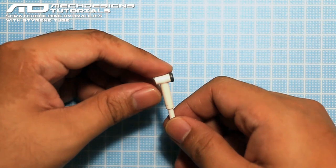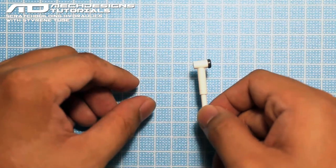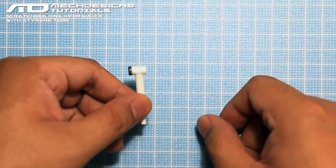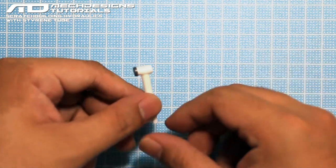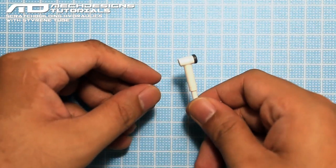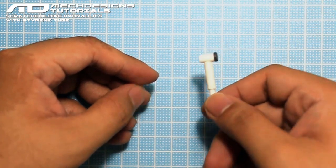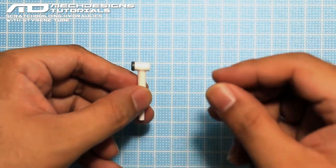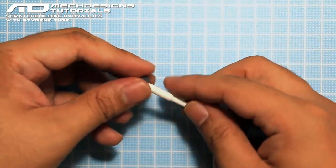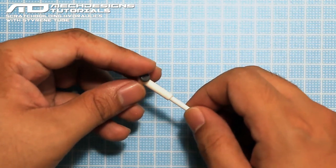And one good thing about this is that if you create two of these, you would know which one is for the right side and which one is for the left side. So take note of that in terms of scratch building something and you have to make it identical. So despite being identical, you need to also identify which goes from which side. So that's how you create hydraulics and or pistons using styrene tube.